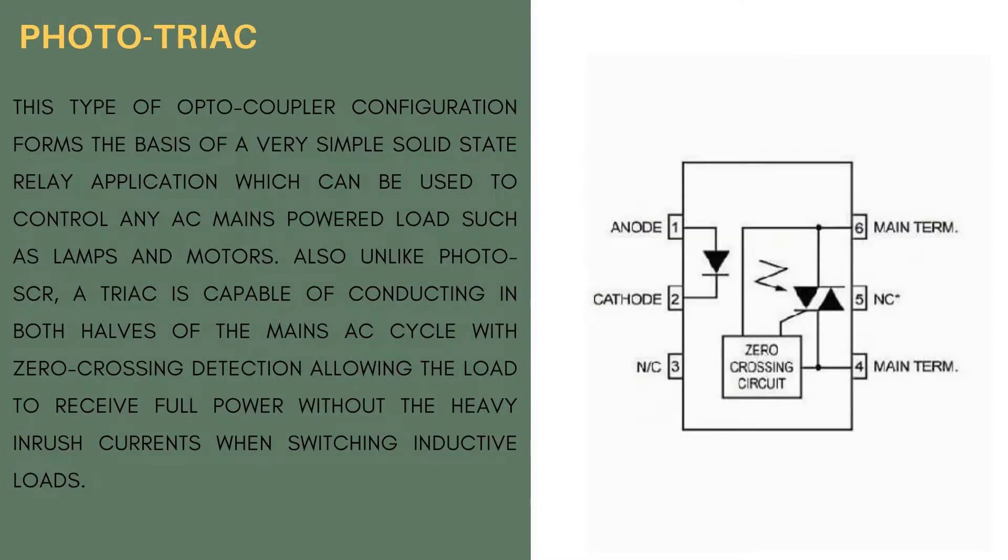This type of opto-coupler configuration forms the basis of a very simple solid state relay application, which can be used to control any AC mains powered load such as lamps and motors. Also unlike photo-SCR, a TRIAC is capable of conducting in both halves of the mains AC cycle with zero crossing detection, allowing the load to receive full power without the heavy inrush currents when switching inductive loads.